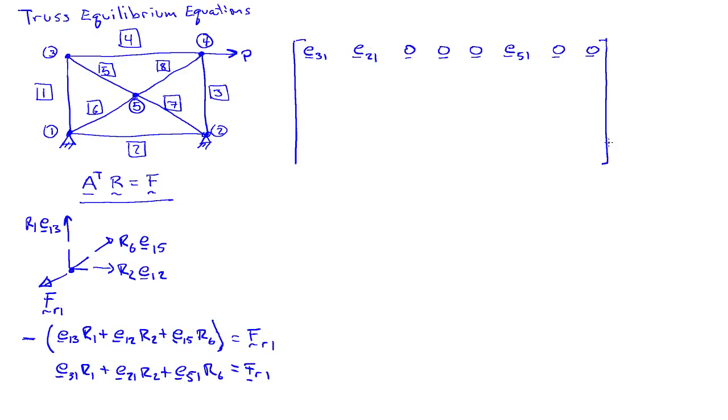This is going to be our matrix here. We may need a little bit more room. This is going to multiply into the vector R, which is R1, R2, R3, R4, R5, R6, R7, R8. And that's going to be equal to all the applied loads plus the support reaction. So we have a support reaction at node 1.